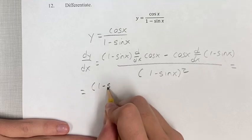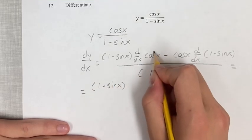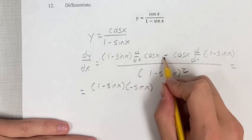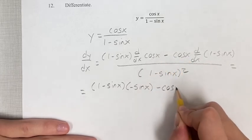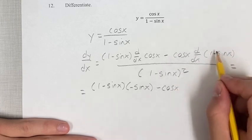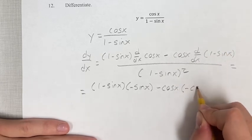So we have 1 minus sine x, times the derivative of cosine x is negative sine x. And this is minus cosine x. The derivative of 1 is 0, since it's a constant, so we just ignore it. And then the derivative of negative sine x is negative cosine x.